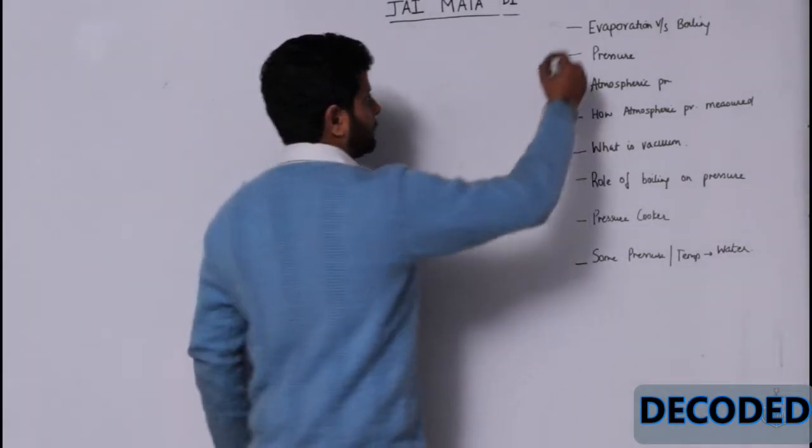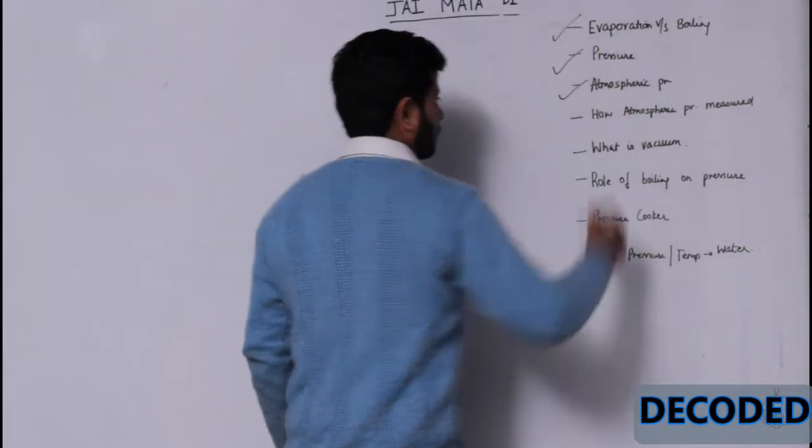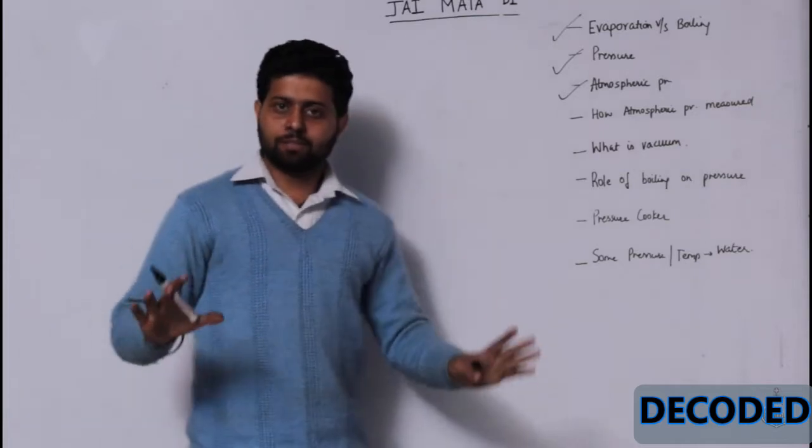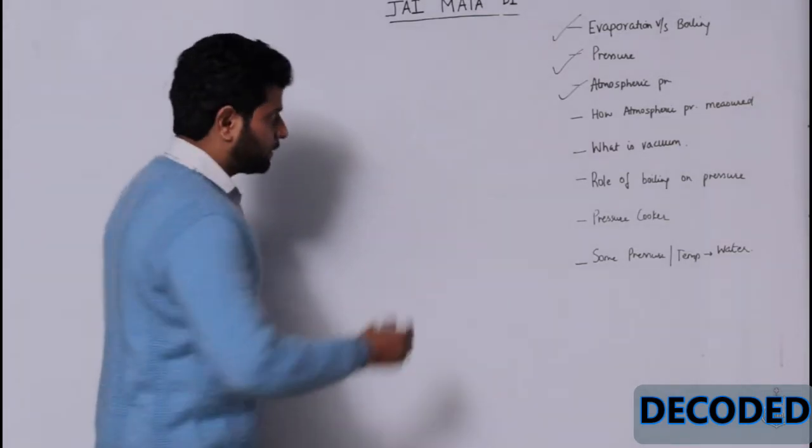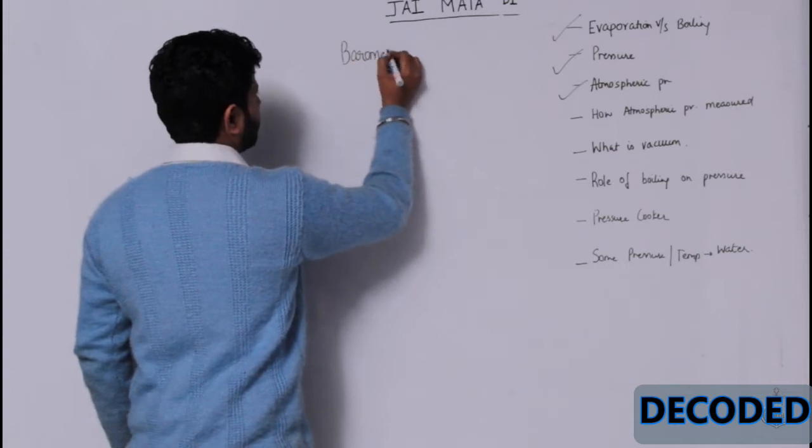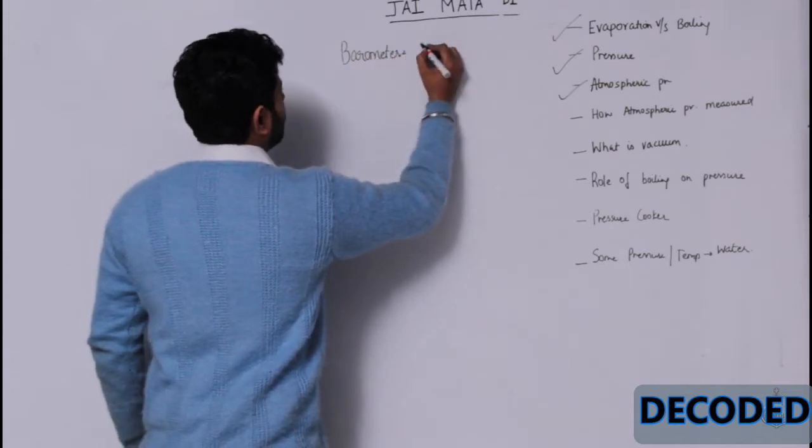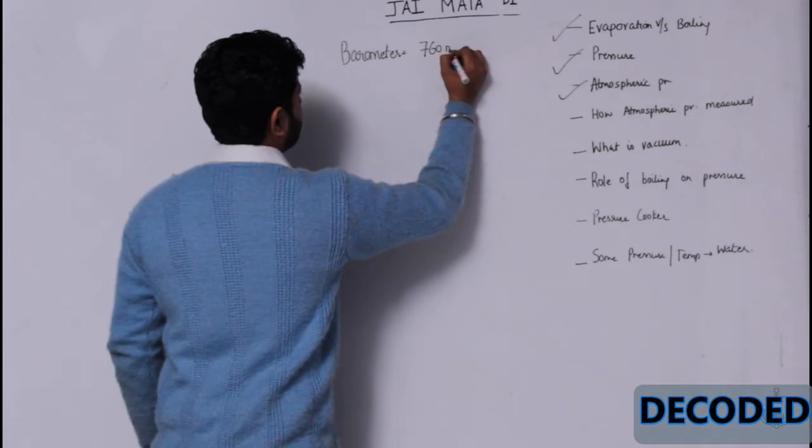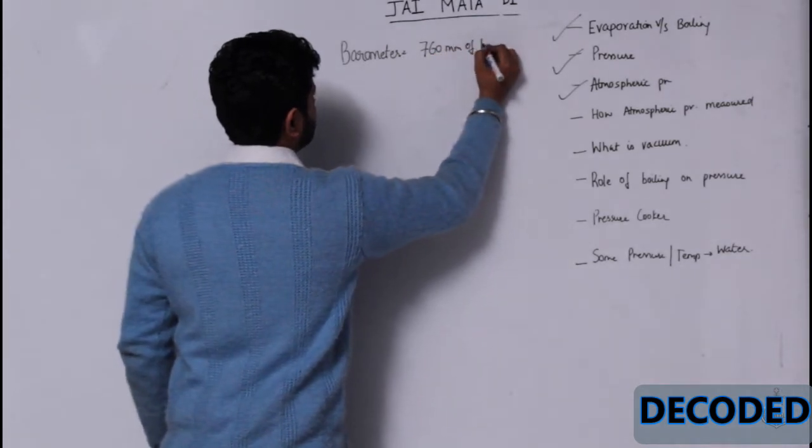Next topic is - we have completed this. How is atmospheric pressure measured? Everybody knows the answer. We measure it with the help of a barometer, and the pressure is 760 mm of mercury column.